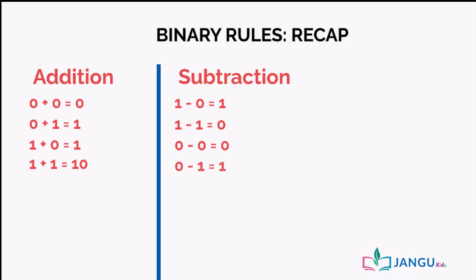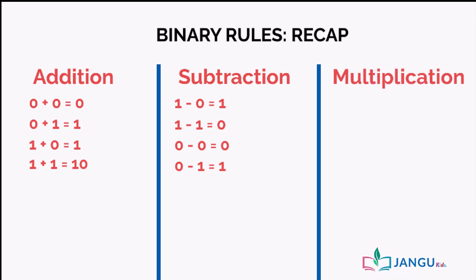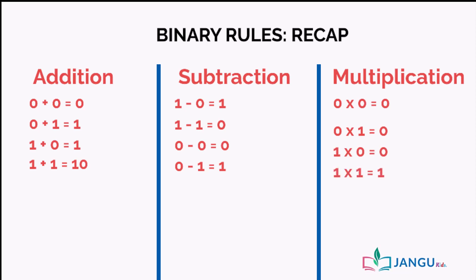Lastly, we'll look at the rules for multiplication. 0 times 0 is equal to 0; 0 times 1 is equal to 0; 1 times 0 is equal to 0; and 1 times 1 is equal to 1.